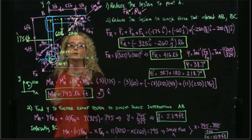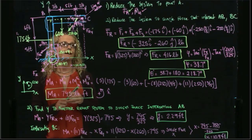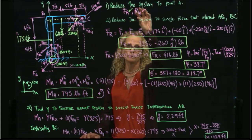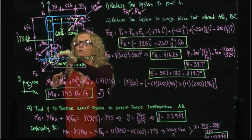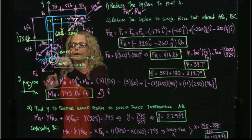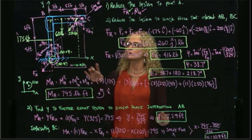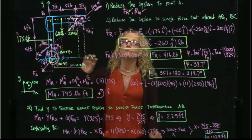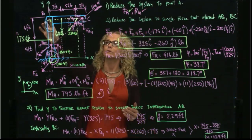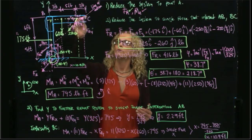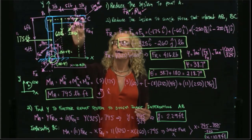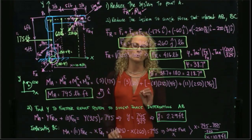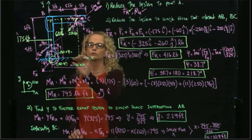The conclusion is: I can reduce the system to point A and get a resultant force and a resultant moment. I can further reduce the system to a force intercepting AB, where the force must be placed at 2.29 feet. If I want a single force intercepting BC, I slide the force and place it at 10.9 feet from B to have an equivalent system producing the same moment as calculated initially at A.